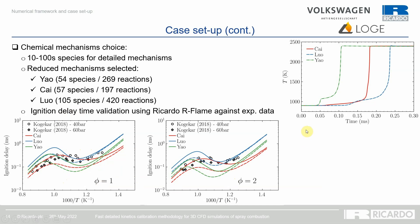What differentiates the mechanisms is the type of auto-ignition obtained. The Yao mechanism features a very strong two-stage auto-ignition with an initial low-temperature sharp rise and then a high-temperature fairly sharp rise. The Luhr mechanism also features a two-step auto-ignition with a somewhat smoother low-temperature chemistry, while the Kai mechanism produces a single-stage auto-ignition.